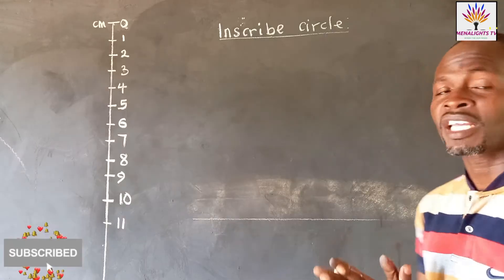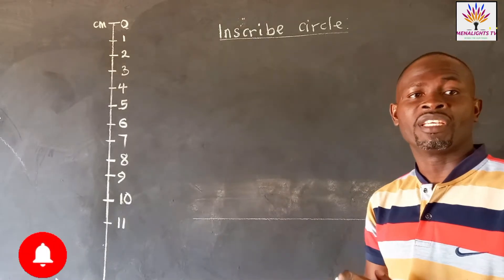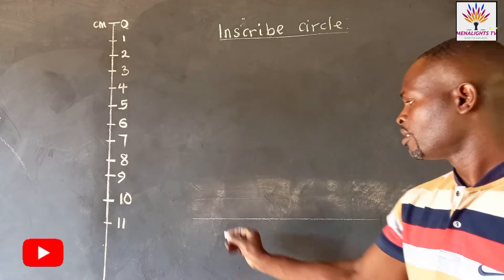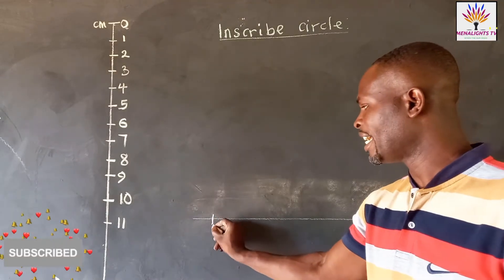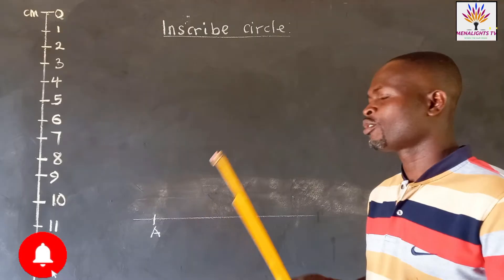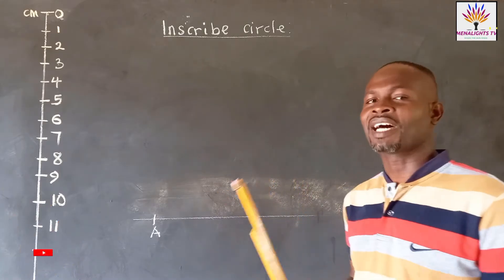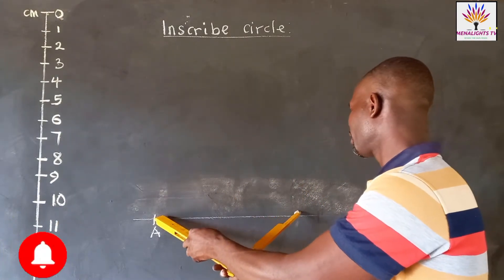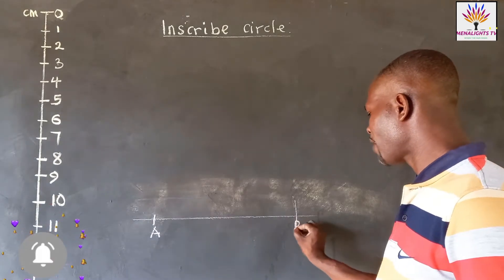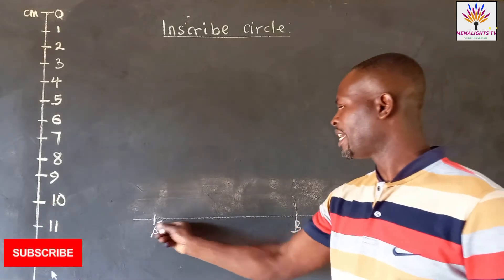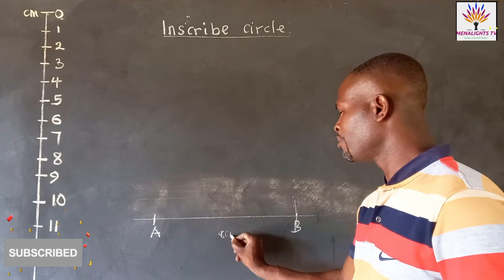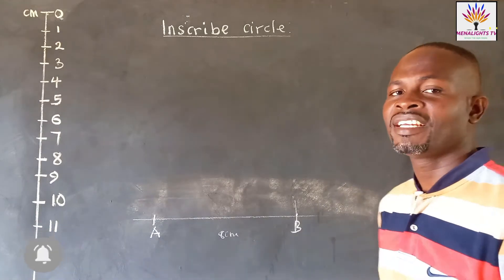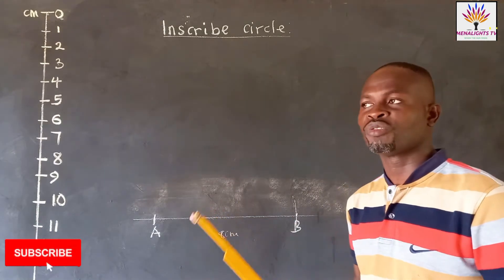So we have to draw the line segment AB of 8 centimeters. First, we locate the point A. After taking our 8 centimeters, we stand on A and make an arc. This is where we have our B, so that from A to B is 8 centimeters. In the same way, from A to C is 8 centimeters, and B to C is 8 centimeters.